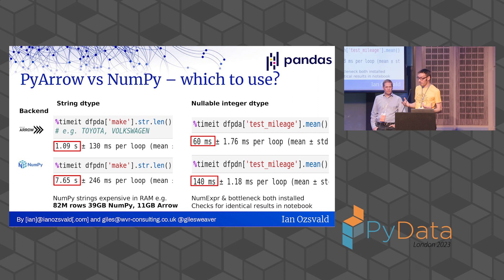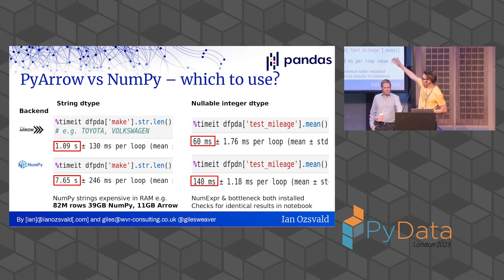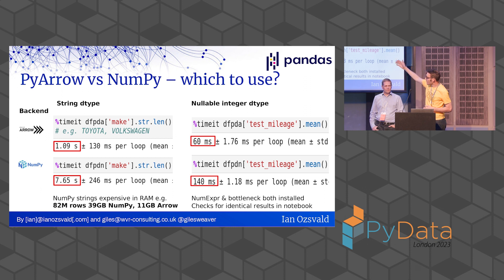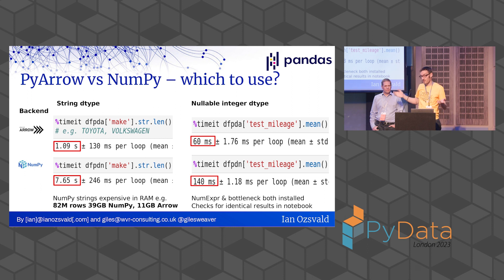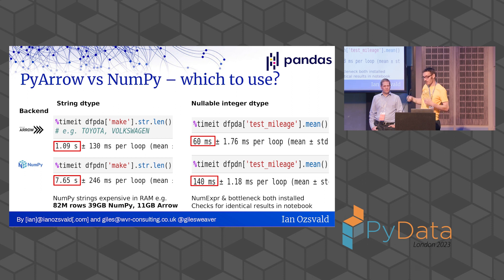Here's a first result — what do we get from the PyArrow change versus the default NumPy engine? With the Arrow version of my Pandas dataframe (DFPD-A), the str.len operation on the make column takes one second. The NumPy equivalent (DFPD-N) takes seven seconds for the same operation on 82 million rows — about seven times faster with Arrow for string operations. More interestingly, 82 million rows is 39 gigabytes in RAM with NumPy, but only 11 gigabytes with Arrow for the same data — so you get three times more data in memory. That's a huge win without having to reconfigure your machine.